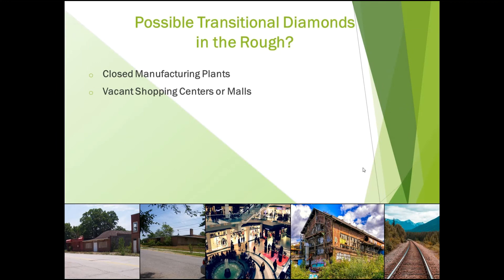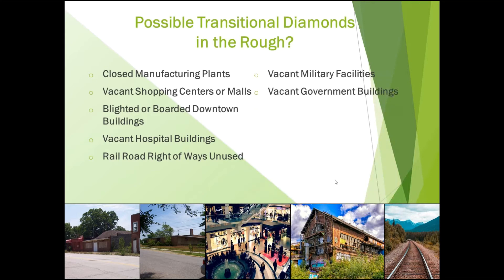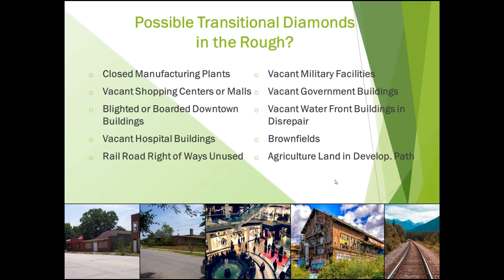What is your diamond in the rough? Ben, Bob, and I have put together some examples of potential transitional projects that might be suited to your area. These include: closed manufacturing plants, vacant shopping centers or malls, blighted or boarded downtown buildings, vacant hospital buildings, railroad rights-of-way unused, vacant military facilities, vacant government buildings, vacant waterfront buildings in disrepair, brownfields, and ag land that's in the path of development.